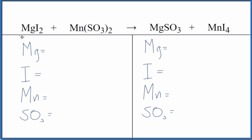If you're asked to balance this equation, MgI2 plus Mn(SO3)2, that's magnesium iodide and manganese 4-sulfite, here's how you do it.